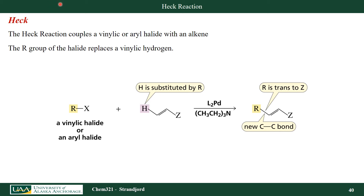Let's now look at the Heck reaction, which has a lot of similarities to the Suzuki reaction. It uses the same palladium catalyst. However, in this case I'm going to use a vinylic or aryl halide, and we're going to replace a vinylic hydrogen instead of a halogen. Here is an alkene where Z can be another halogen, a hydrogen, or an R group. What I'm doing is coupling this whole alkene group to my R group, forming one new carbon-carbon bond between the R group of my vinylic or aryl halide and the alkene carbon.